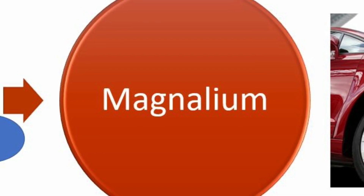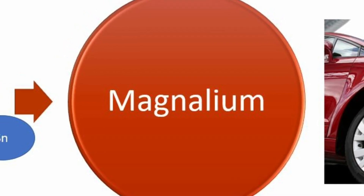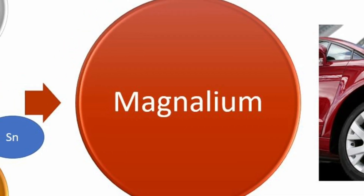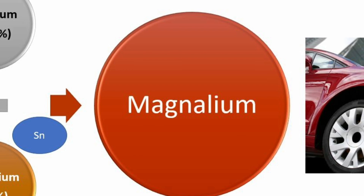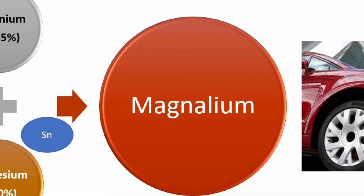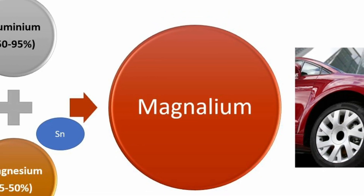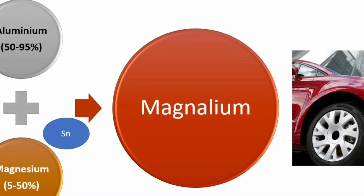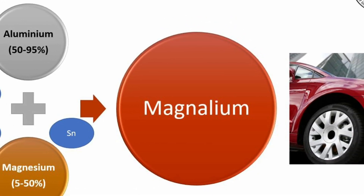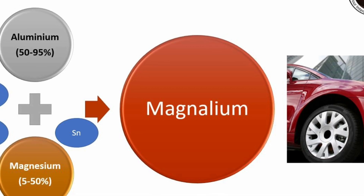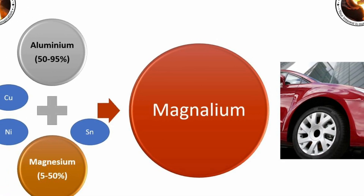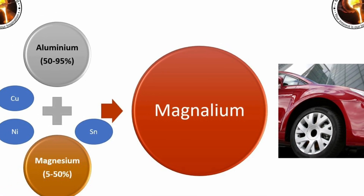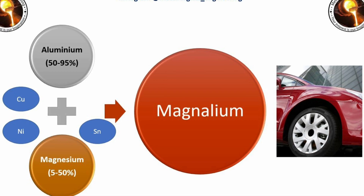Next is magnolium. It is an aluminum-based alloy and magnesium is the main alloying element. Other alloying elements are copper, nickel, and tin. The composition of magnolium is 50 to 95 percent aluminum and 5 to 50 percent magnesium. It is used in aircrafts, car parts, and fireworks.